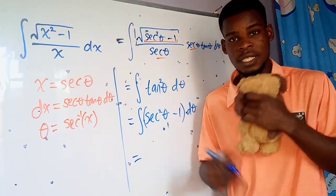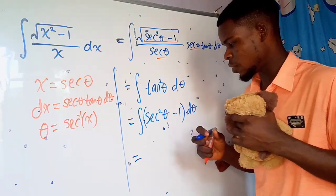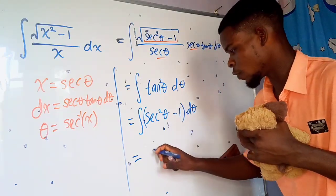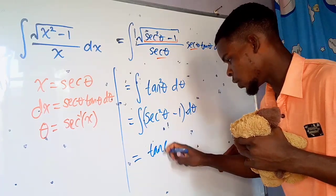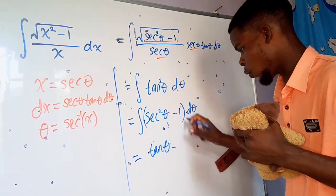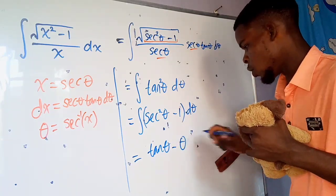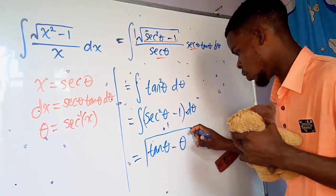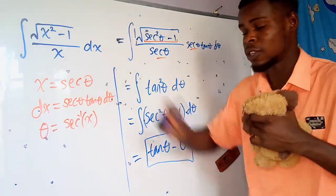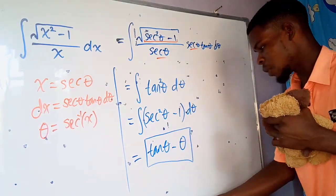Let me rewrite this: tangent squared theta, as I said earlier, equals secant squared theta minus 1. So we have the integral of secant squared theta minus 1, dθ. The antiderivative of the difference of two functions is the difference of the antiderivatives. The antiderivative of secant squared theta is tangent theta, since the derivative of tangent theta is secant squared theta. The antiderivative of 1 with respect to theta is just theta.